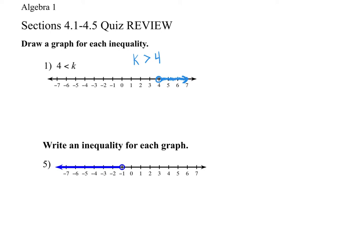Look at this next one. You can pick whatever variable you want. You are obviously starting at negative one, and then you have to decide: is the graph smaller than negative one or larger than negative one? It's everything to the left, so it is smaller. Then you have to decide: does it include the negative one or does it not? In this case, it does not include the negative one — it's an open circle. So leave it without the 'or equal to' with an open circle there.